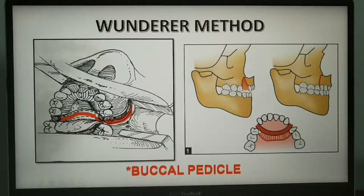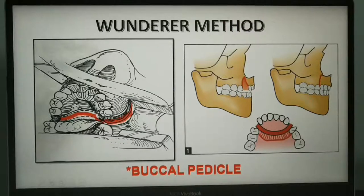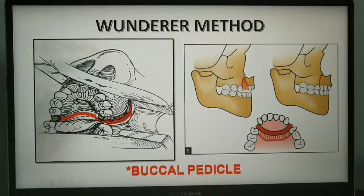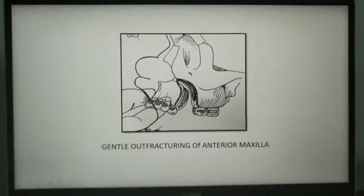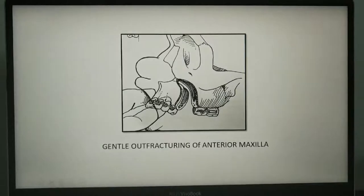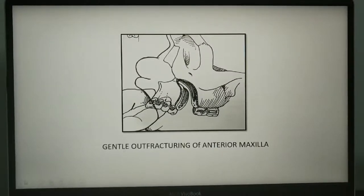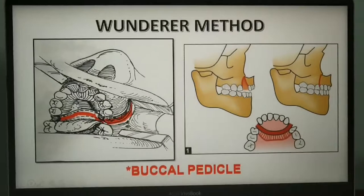This is followed by a transpalatal osteotomy across the palate at the first premolar site — the palatal osteotomy is marked in red in the diagram. Once all three osteotomies are performed, the nasal septum is separated from the maxillary segment by gently out-fracturing the anterior maxillary segment superiorly.